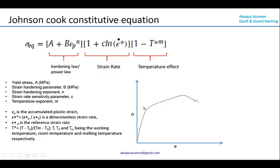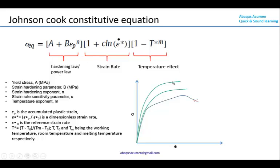This stress-strain curve can be fitted using the hardening power law. When you pull the same specimen or same material with a higher strain rate, the yield stress or ultimate stress goes above the normal low-speed curve, and at the same time the failure strain also reduces. This behavior can be captured through tensile testing and represented using the strain rate term in the equation.